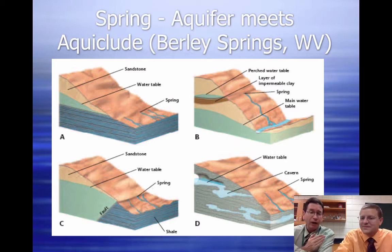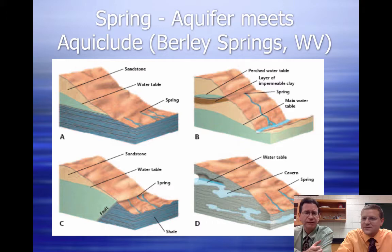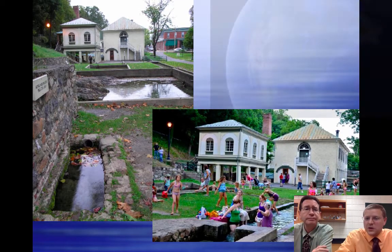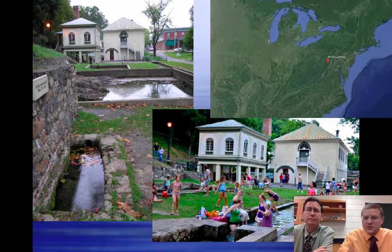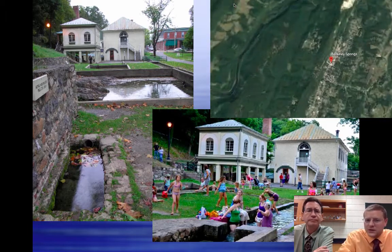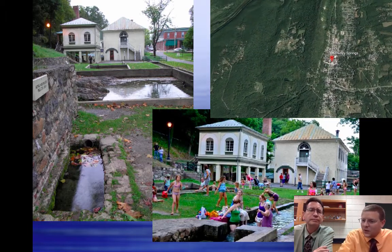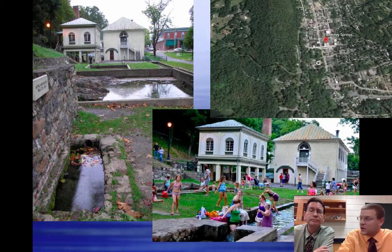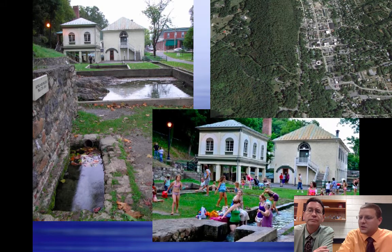It works under gravity, so as long as there is a way for the water to reach the outside of the hill. A local example is Berkeley Springs in West Virginia. You can see that people either swim in it, drink it, or bathe in it — water freely flowing out of the ground. It looks like they've made a couple of reservoirs or channels.